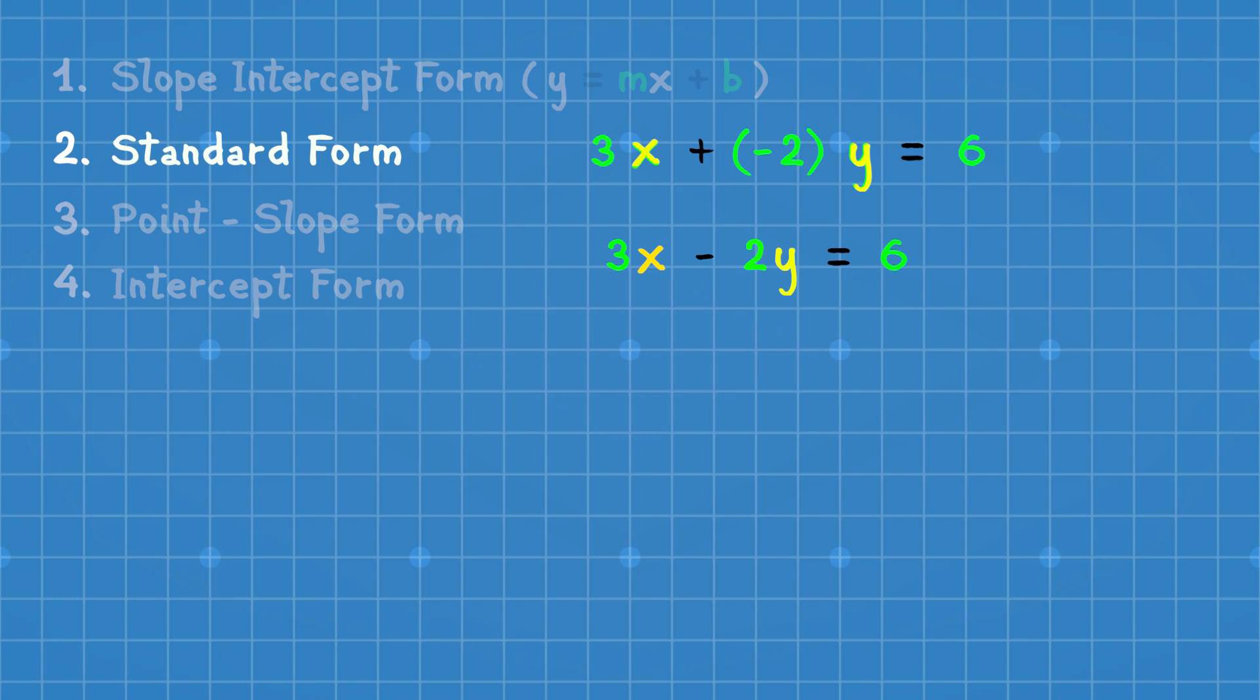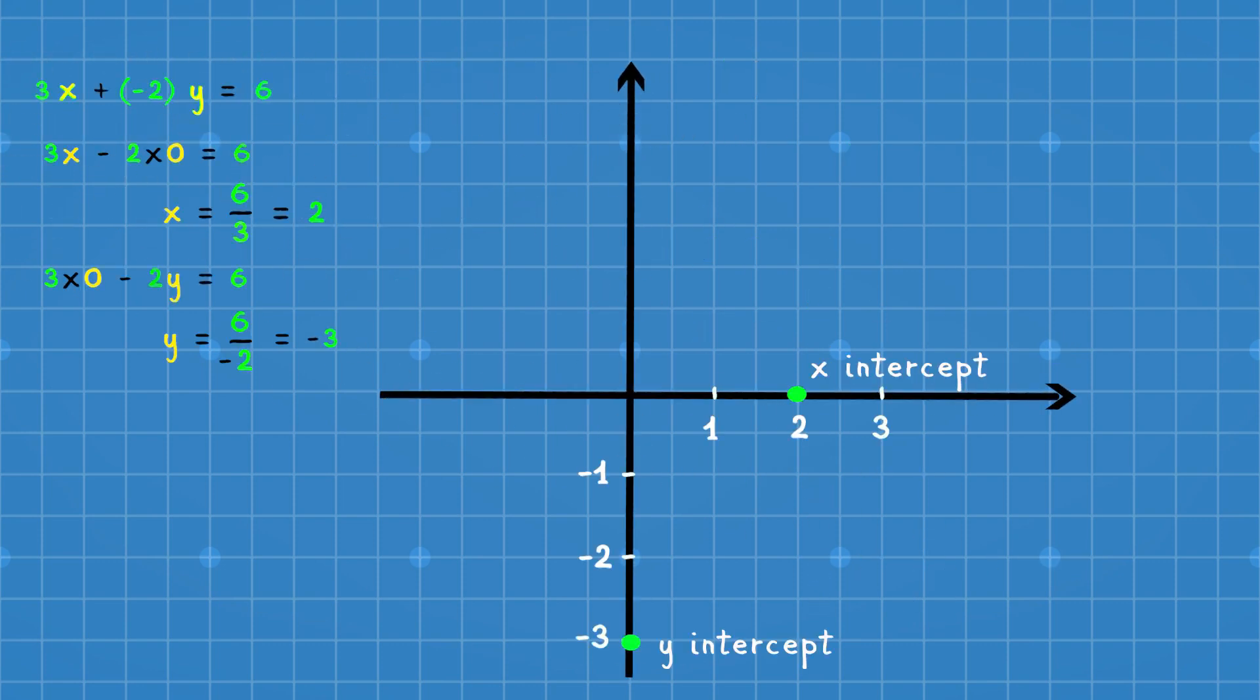To find x-intercept, consider y equal to 0. This will give x-intercept, which is 2. Similarly, for y-intercept, take x as 0, which gives y-intercept as minus 3. Mark x and y intercepts on the graph and join them to get a line.